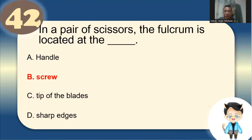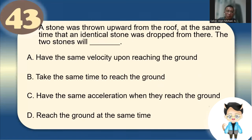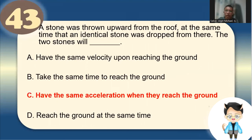Number 42: In a pair of scissors, the fulcrum is at the screw — not the blades or edges. Number 43: A stone thrown upward from a roof and an identical stone dropped simultaneously — both have the same acceleration due to gravity and will reach the ground with the same acceleration.